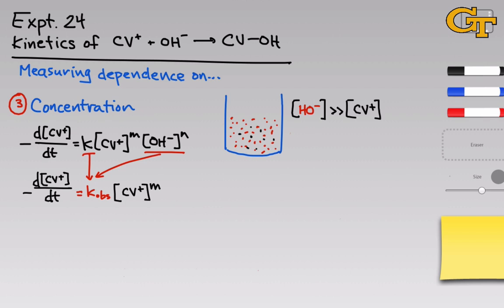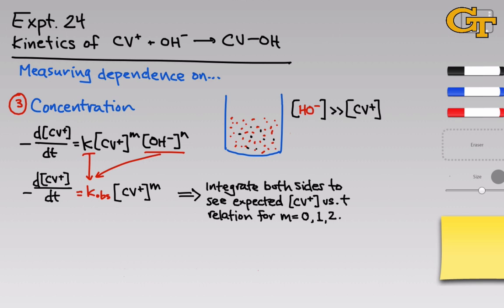The idea mathematically is to integrate both sides to get a relation between crystal violet concentration and time. The possible values of m are 0, 1, and 2 — zero order, first order, second order. We develop kinetic models corresponding to each case, then measure the concentration of CV+ over time, and determine which model — m equals 0, m equals 1, or m equals 2 — fits our data best. The best-fitting model corresponds to the order m with respect to crystal violet.